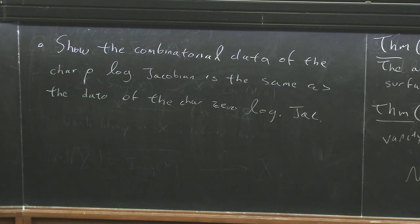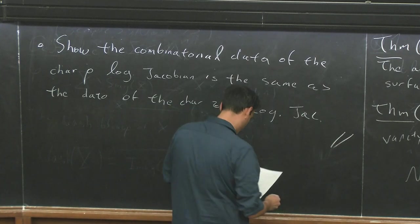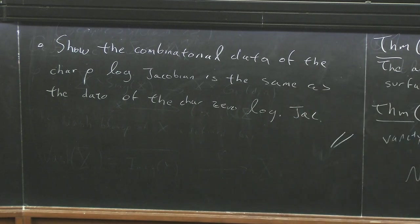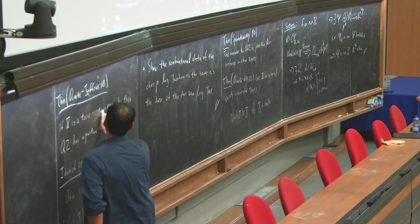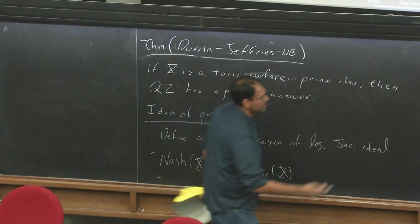And then we're done because we just follow the proof of Gonzalez-Sprinberg once we have that the data is the same and that's what he used to prove the resolution of singularities. So once we have these two, we're done. This needs surfaces.